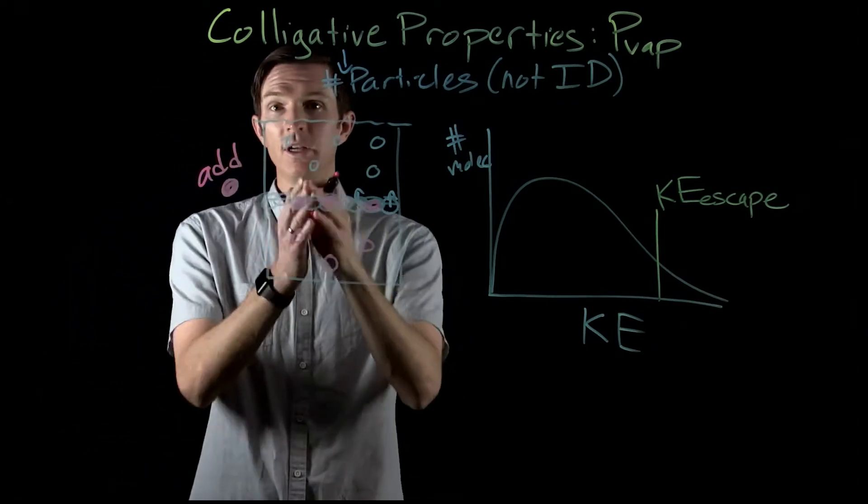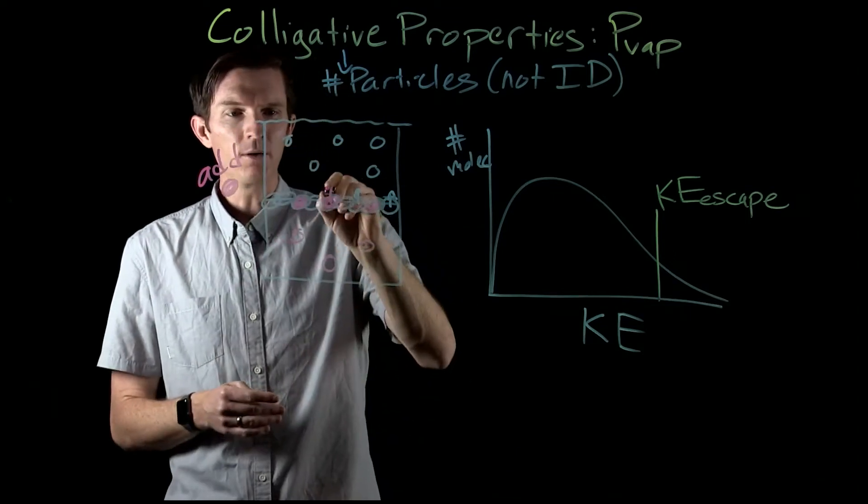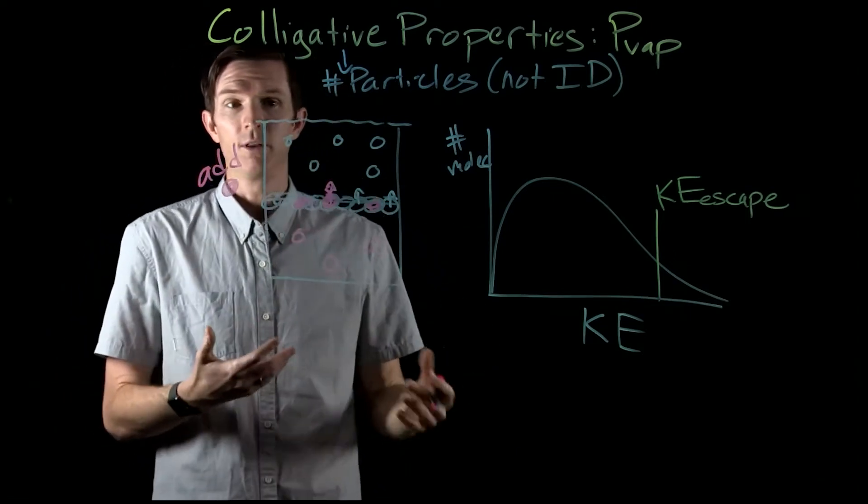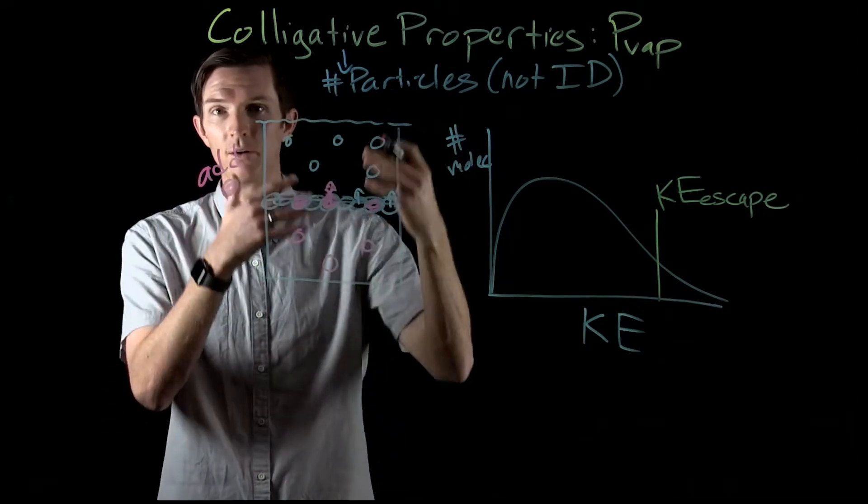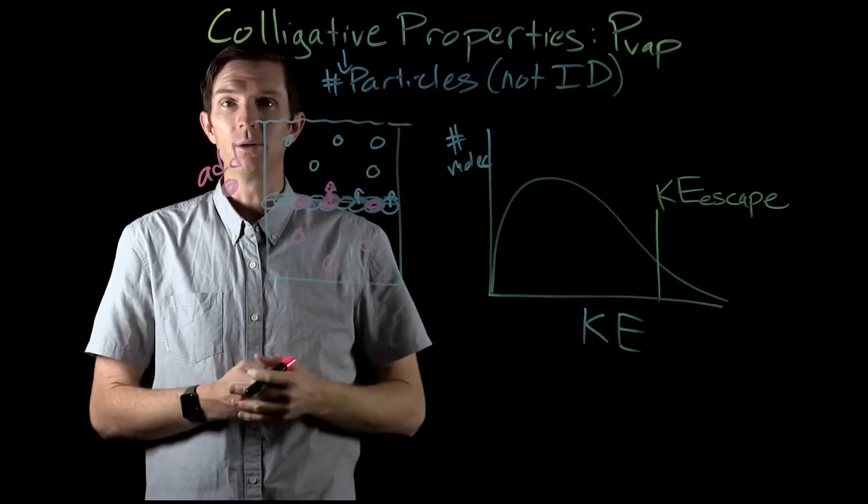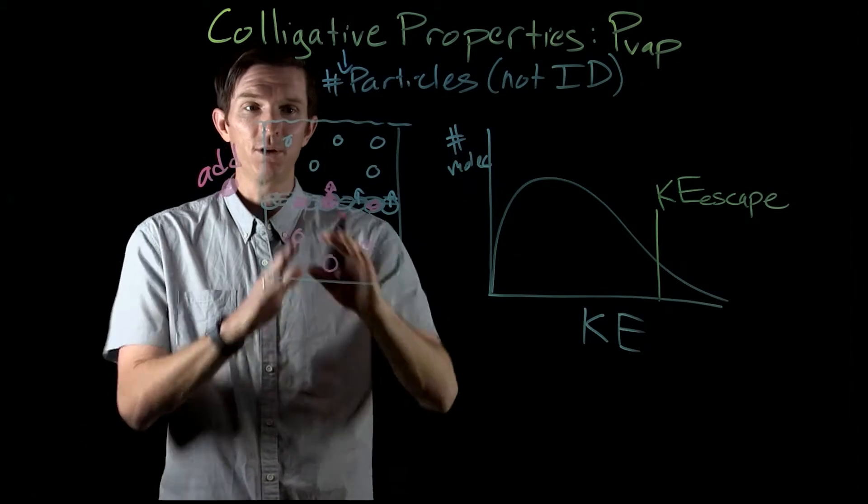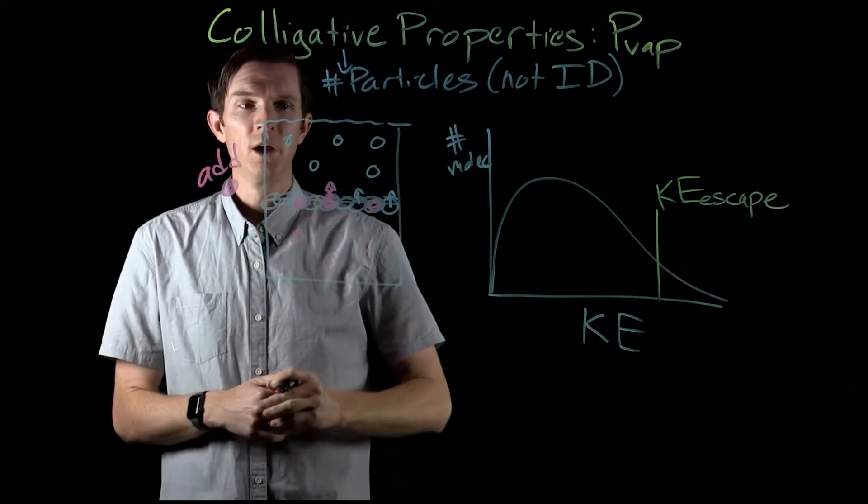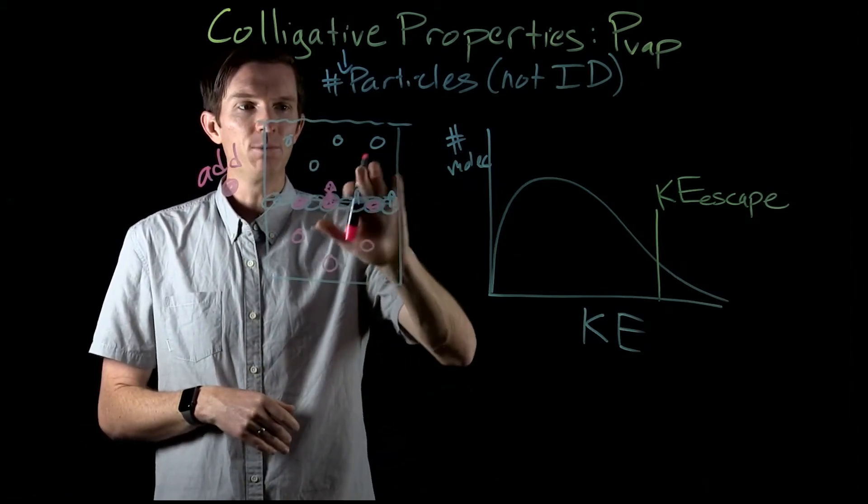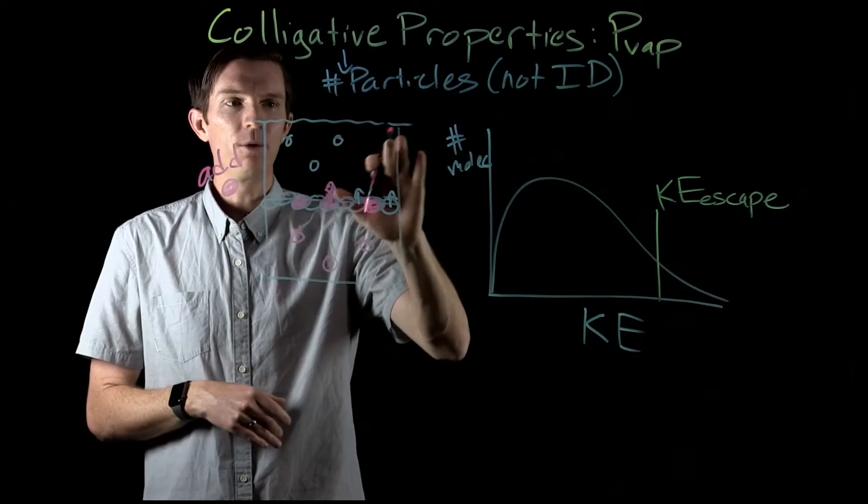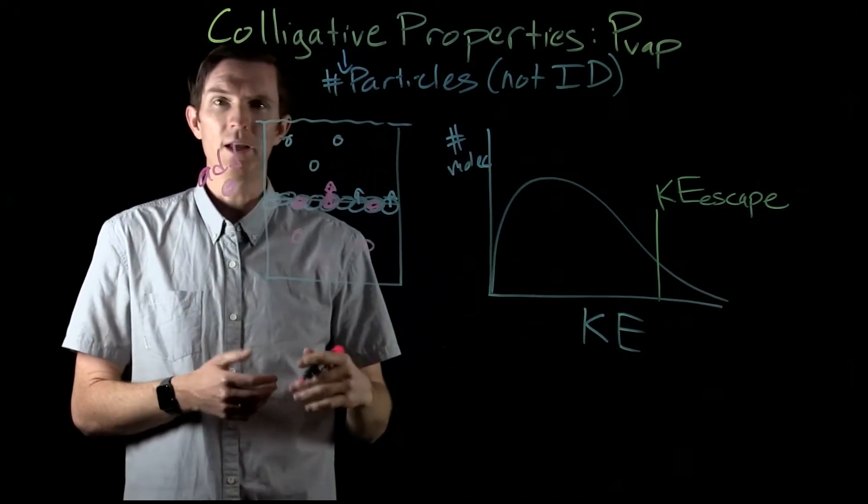Now if I have these particles sitting at the surface, these particles cannot escape. They are non-volatile. They don't contribute to the vapor pressure. They're not going to escape from the liquid. Because they're not going to escape from the liquid, they're not going to contribute to our vapor pressure. So we're going to have fewer of these particles that were in the liquid phase that can escape or leave.